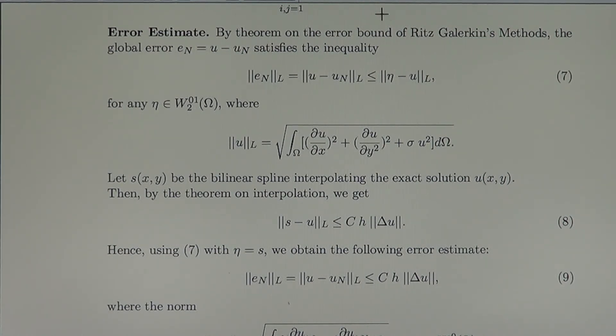We substitute in the variational equation now the interpolating spline to the exact solution. So if we substitute for this eta S, then we have S minus U in the energetic norm L.